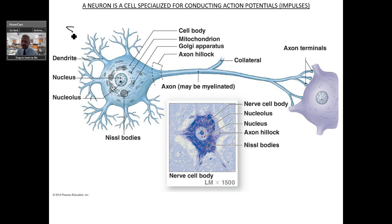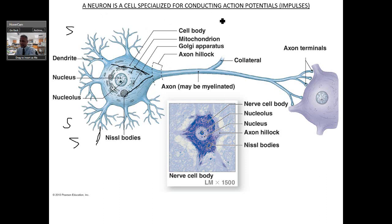What's happening is a stimulus is being picked up by the dendrites, and then it hubs at the cell body. If there's enough of a stimulus, it causes a depolarization of the axon — that's called an action potential. A neuron is a cell specialized in conducting action potentials or impulses. The signal runs in the direction of the axon toward the axon terminal, which then interacts with another cell.